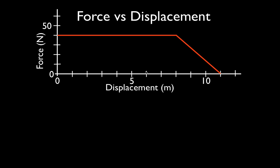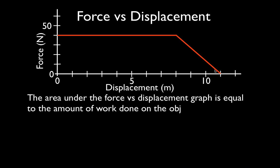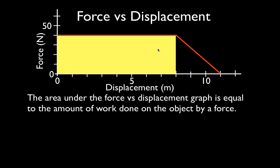Looking at the graph, for the first 8 meters of displacement the force is constant at 40 newtons. Then from 8 to 11 meters the force decreases from 40 newtons to zero. You should know that the area under the force versus displacement graph is equal to the amount of work done on the object — that is, the area between the curve and the x-axis. We basically have two shapes: a rectangle and a triangle.